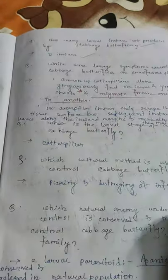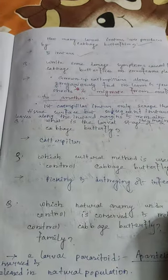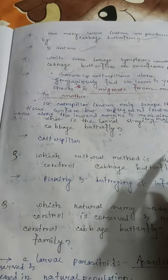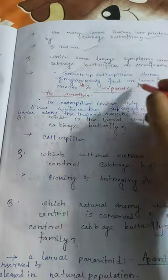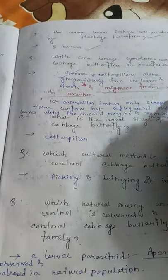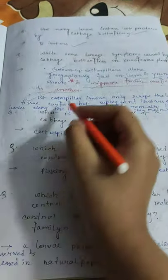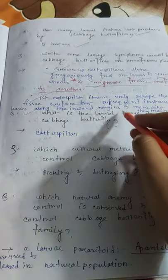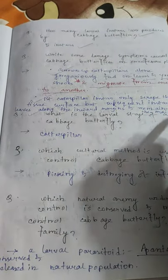Cabbage butterfly produces five larval instars. Damage symptoms: grown-up caterpillars feed gregariously on leaves and young shoots and migrate from one field to another.